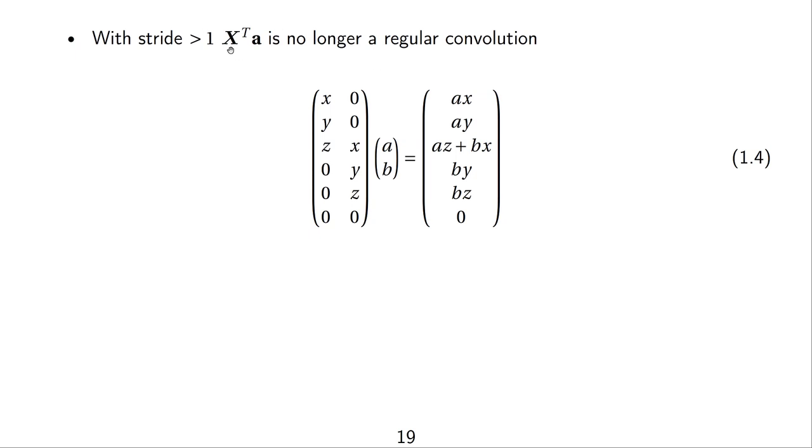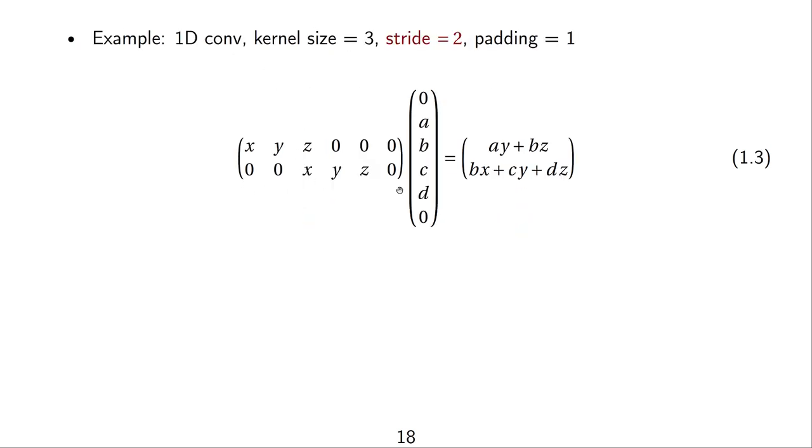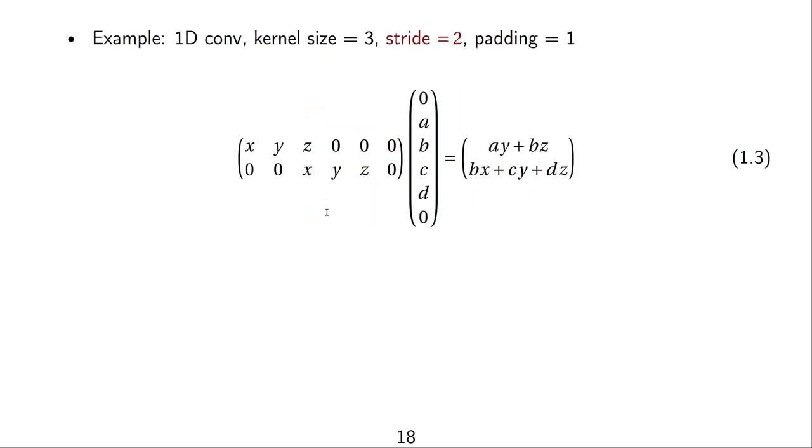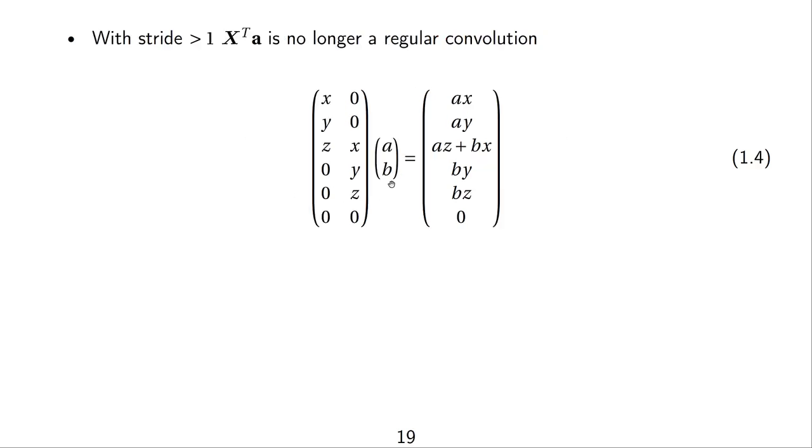Now, we transpose and, again, this x here that is transposed is the same as this one here. So, this is really the same matrix, just transposed. So, here we have a 2 by 6 matrix. Here, we have a 6 by 2 matrix. And, we can verify that the first column of this matrix, x, y, z, 0, 0, 0, is really the first row of this matrix, x, y, z, 0, 0, 0. And, the second column here, the second row here, 0, 0, x, y, z, 0, should correspond to the second column here, 0, 0, x, y, z, 0.